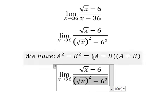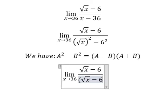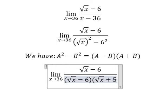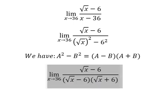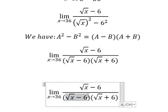We have the limit as x approaches 36 of the square root of x minus 6 over the square root of x minus 6 times the square root of x plus 6. Now we simplify this one and this one.